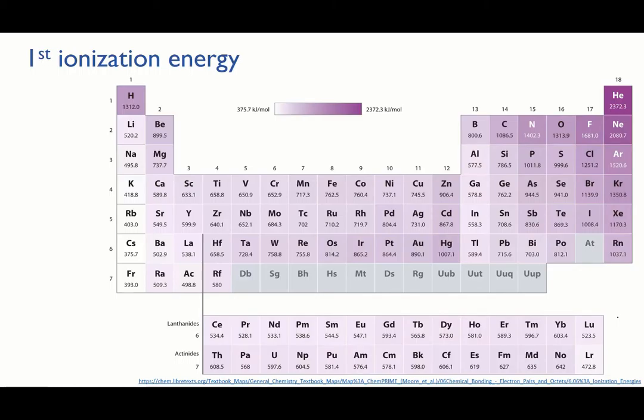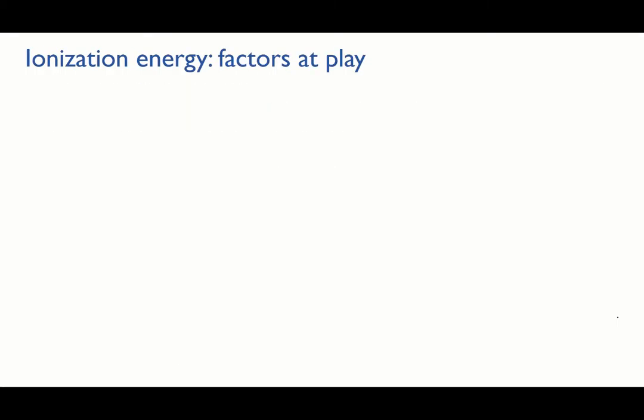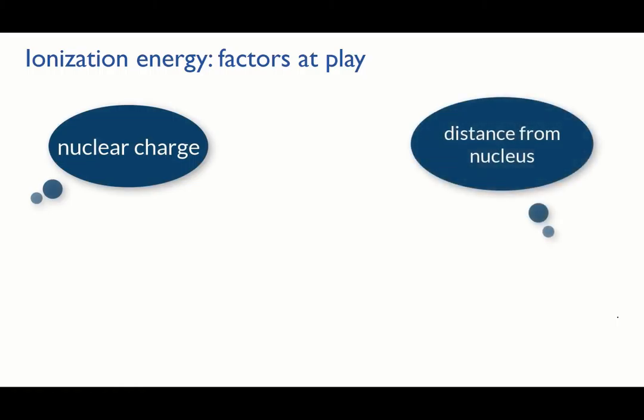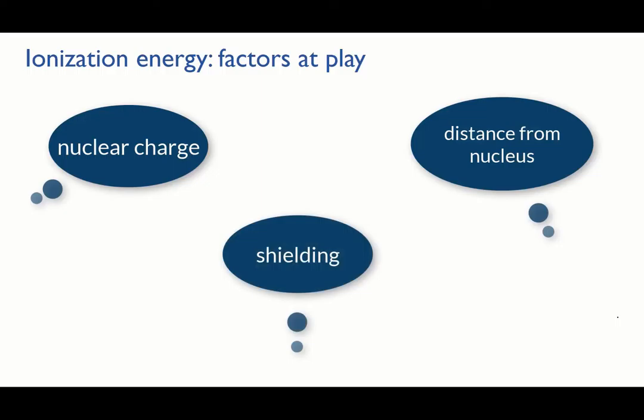It turns out that the three factors we talked about in the context of atomic radius also govern ionization energies. Remember them? We had the amount of charge in the nucleus, or in other words the atomic number, the distance the electron is from the nucleus, what electron shell is it in, and the fact that electrons in lower energy levels can shield outer electrons from the full attraction of the nucleus. The main thing we're looking at here is how each of these affects the attraction between the nucleus and the electron that we're trying to remove.